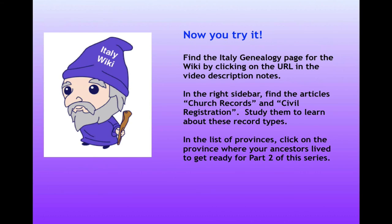Now you try it. Find the Italy Genealogy page for the wiki by clicking on the URL in the notes. In the right sidebar, find the articles on church records and civil registration. As we have discussed, these are the most important records that you will use in Italian genealogy, so it would be good to study them and learn all that you can about these two record types. In the list of provinces at the bottom of the page, click on the province where your ancestors lived. In Part 2 of this series, we will go over these province pages in detail and show you how to use them.